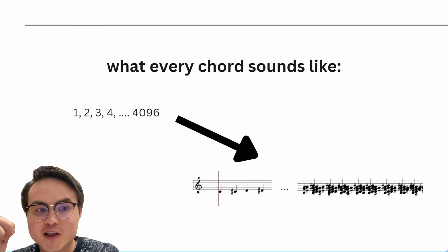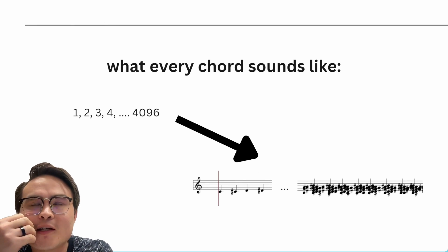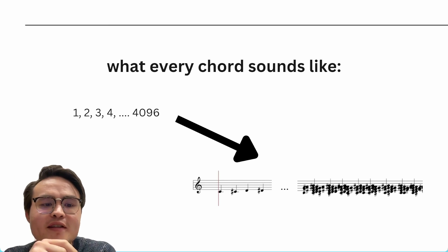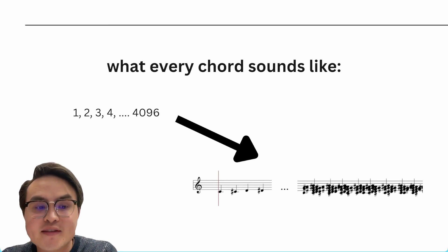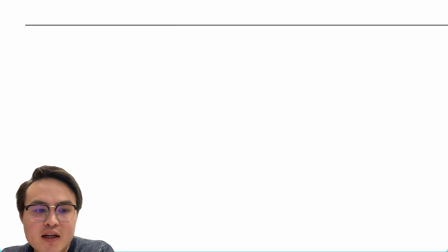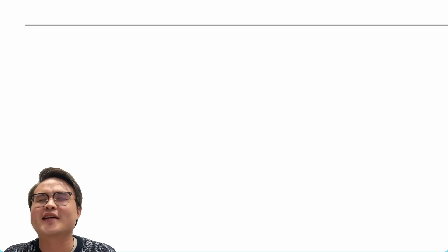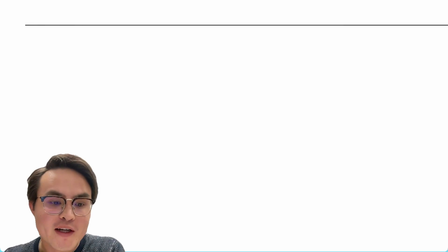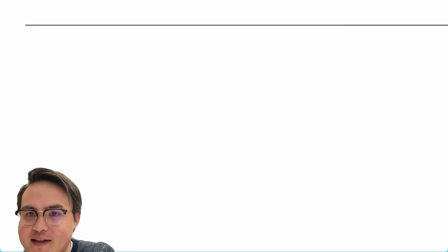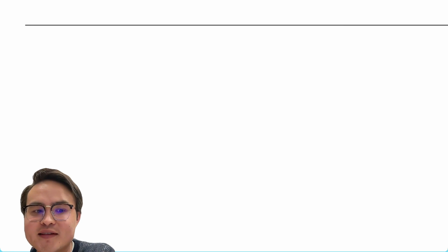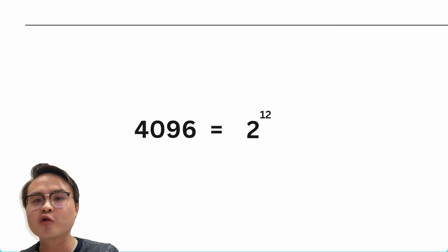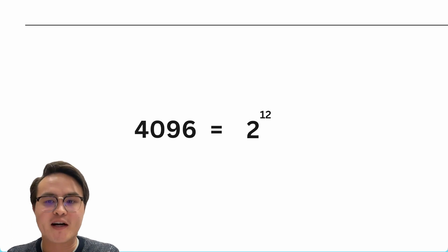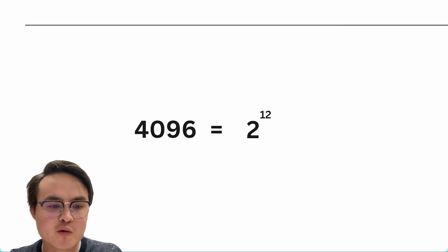On to the next question: what would every chord sound like? This is where the problem is actually quite beautiful, quite elegant. 4096 is the same as taking two and multiplying it by itself 12 times — it's 2 to the power of 12.